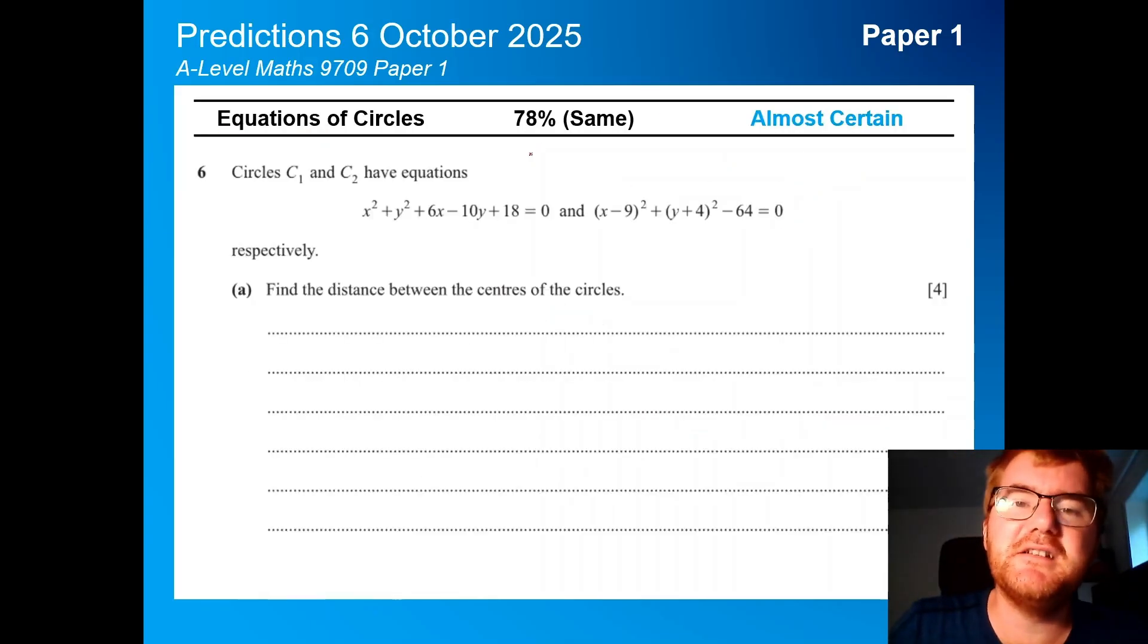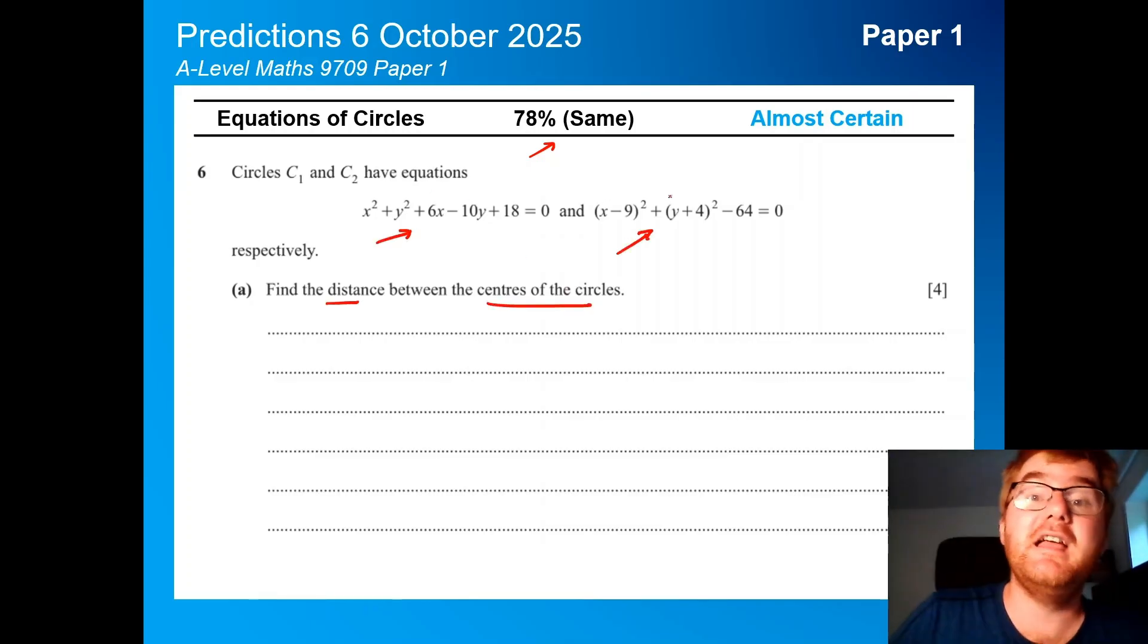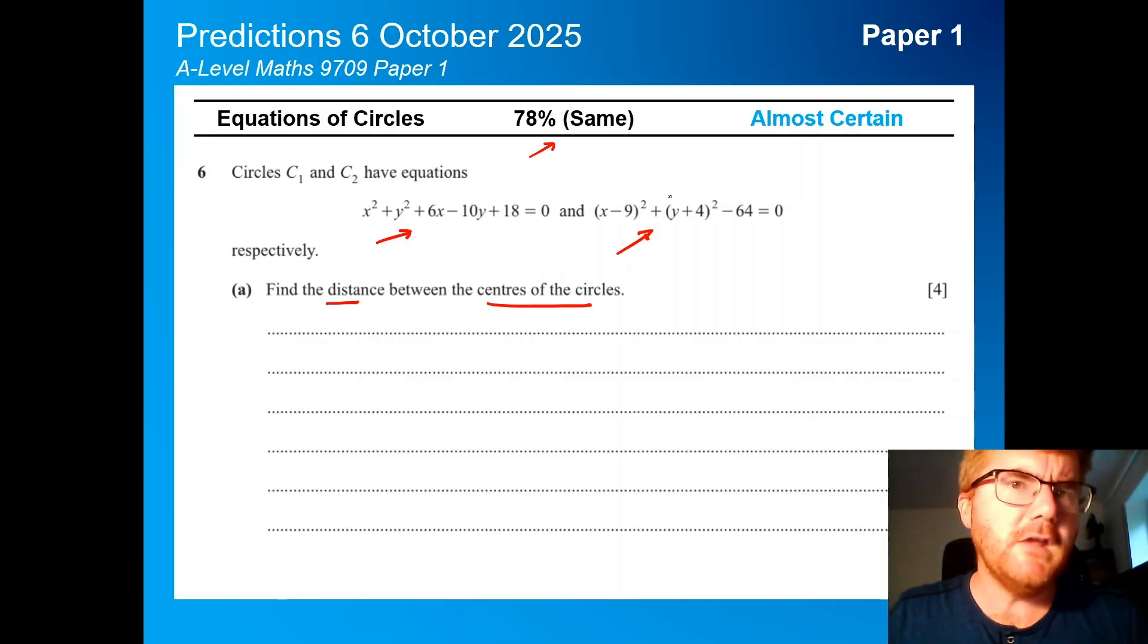Equations of circles at 78%, this doesn't come up every year, but if it does, it's usually in quite a big way. Here we've got two circle equations, and we need to find the distance between the center of the circles, so we need to convert this into the same form as over here, and then you can simply use Pythagoras to work out the distance between the two centers.